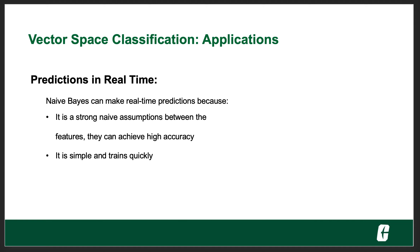Such as predictions in real time. The Naive Bayes can make real-time predictions because it has strong naive assumptions between the features, and they can achieve high accuracy.